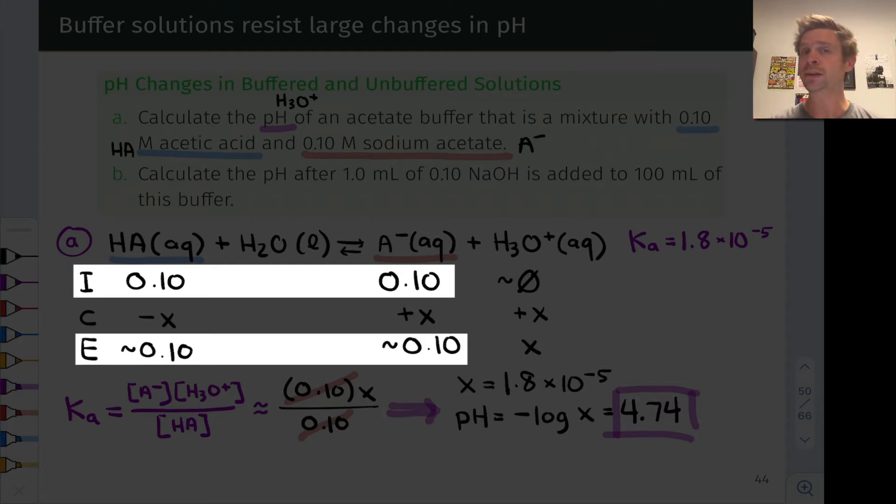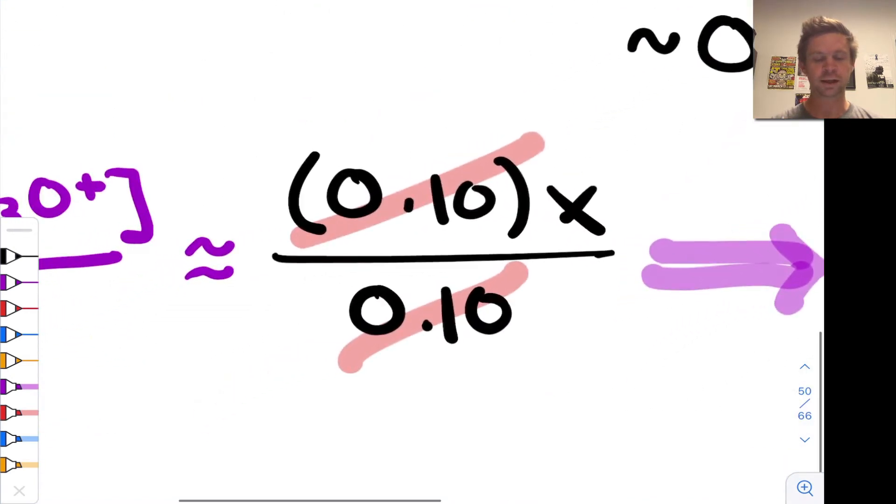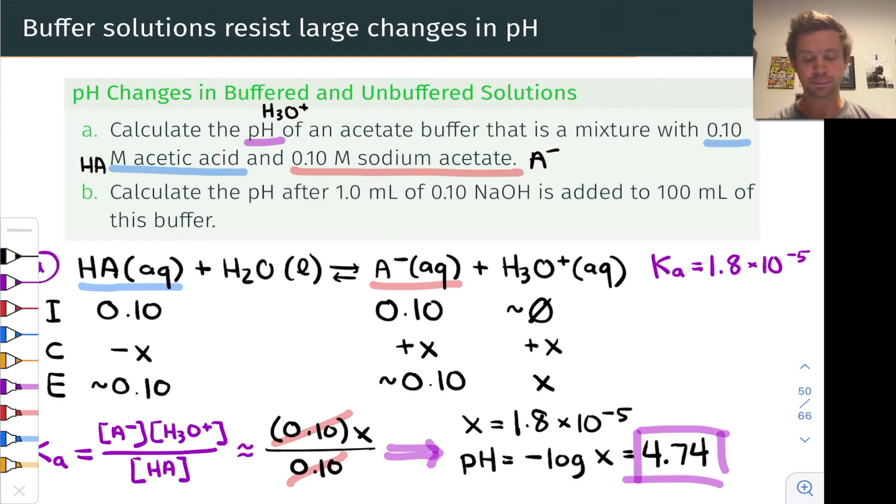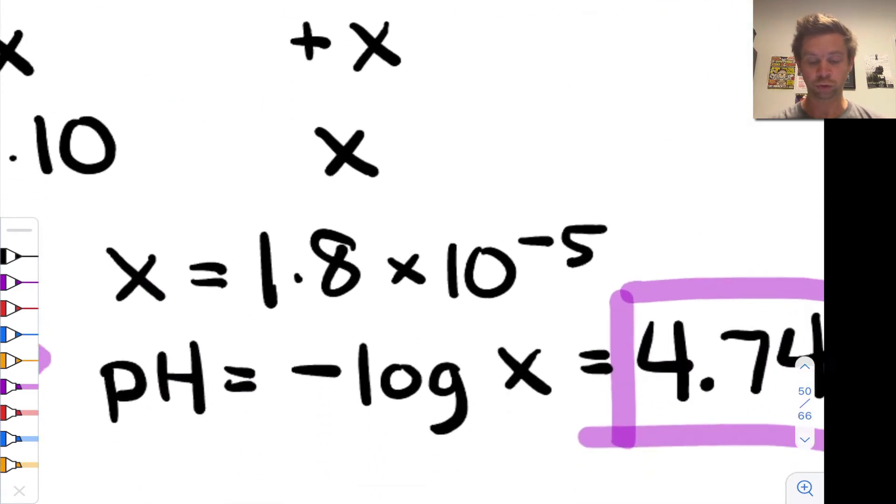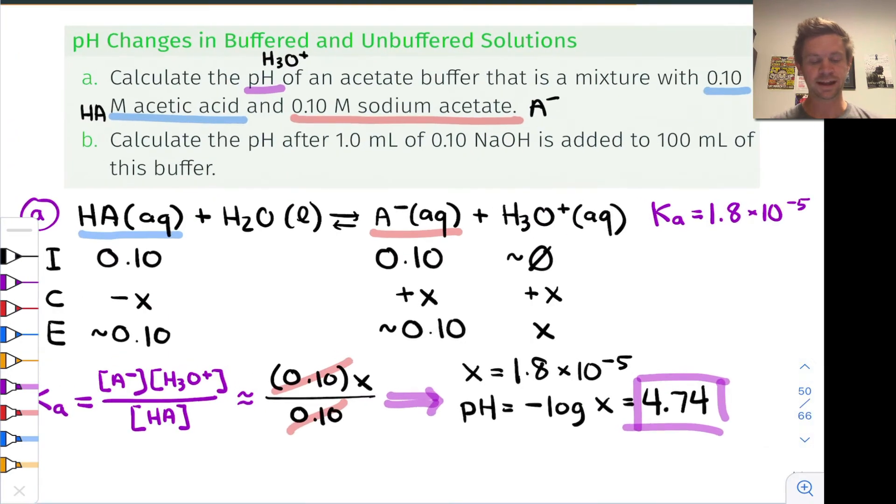X in the ice table is quite small relative to the initial concentrations of HA and A-. This led to a situation where the reaction quotient boiled down to those initial concentrations and the value of X. In this particular case, because the two initial concentrations of conjugate acid and conjugate base were equal to each other, they divided out, and the pH became equal to the pKa after taking the negative base 10 logarithm of the resulting X value, and X turned out to be equal to the Ka value.